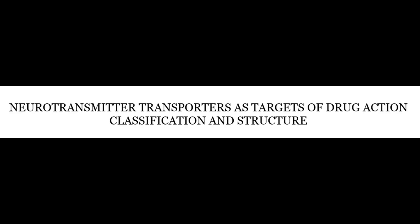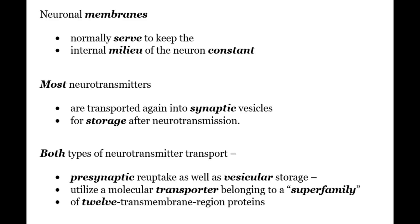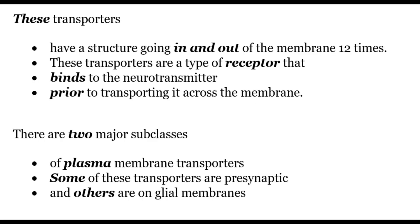Now let's see how transporters act as targets for drug action, their classification and structure. Neuronal membranes normally serve to keep the internal milieu of the neuron constant. Most neurotransmitters are transported again into synaptic vesicles for storage after neurotransmission. Both presynaptic reuptake and vesicular storage utilize a molecular transporter belonging to a superfamily of 12 membrane region proteins. These transporters have a structure going in and out of the membrane 12 times, hence the name.